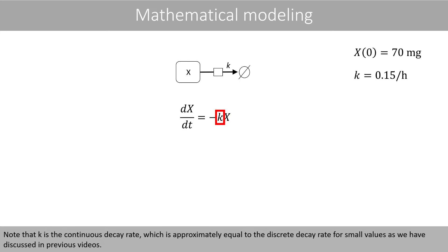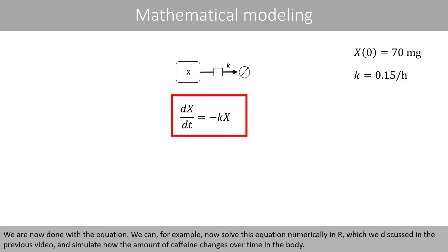Note that k is the continuous decay rate, which is approximately equal to the discrete decay rate for small values, as we have discussed in previous videos. We are now done with the equation. We can, for example, now solve this equation numerically in R, which we discussed in the previous video, and simulate how the amount of caffeine changes over time in the body.